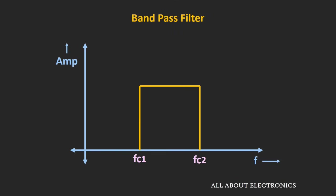But sometimes in some applications, we are only interested in a particular band of frequencies. For such applications, we can use a bandpass filter. This bandpass filter passes only a certain band of frequencies and rejects all the frequencies which are outside of this band. Now there are many ways in which we can design this bandpass filter.